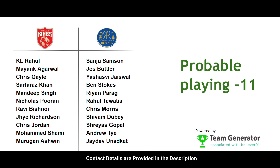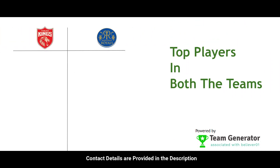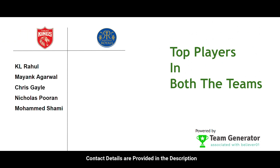Some players might change but most will remain the same. The top players from the Punjab Kings side are KL Rahul, Mayank Agarwal, Chris Gayle, Nicholas Pooran, and Mohammed Shami. From the Rajasthan Royals side, the top players are Sanju Samson, Jos Buttler, Ben Stokes, and Chris Morris.